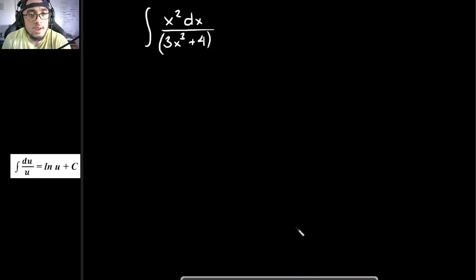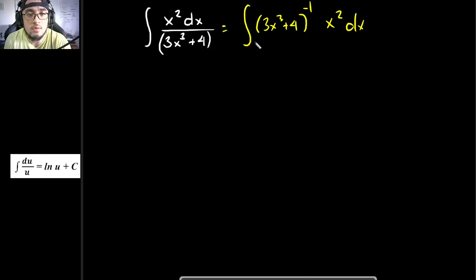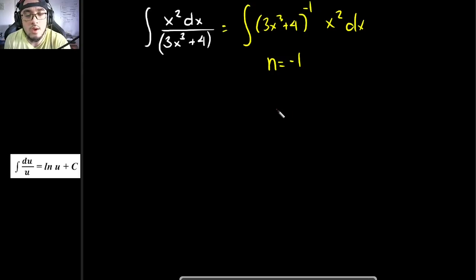Let's proceed to our next problem. We are to solve for the integral of x squared dx divided by 3x cubed plus 4. This can be rewritten as the integral of 3x cubed plus 4 raised to negative 1 times x squared times dx. The exponent of the u term is negative 1, so we cannot use the power formula. Instead, since n equals negative 1, we use the logarithm formula.